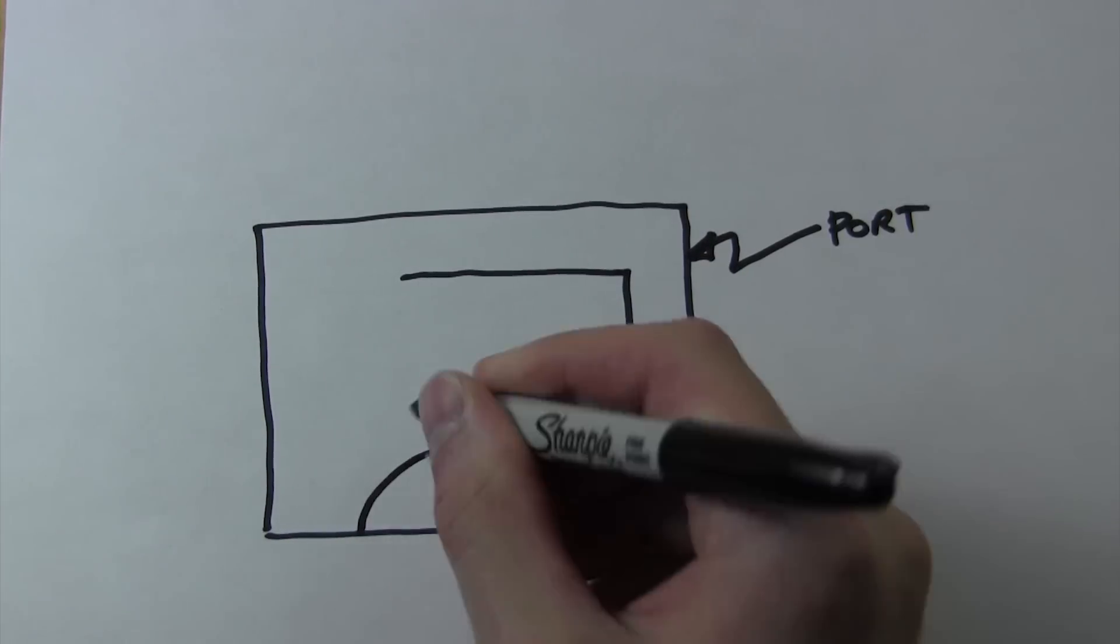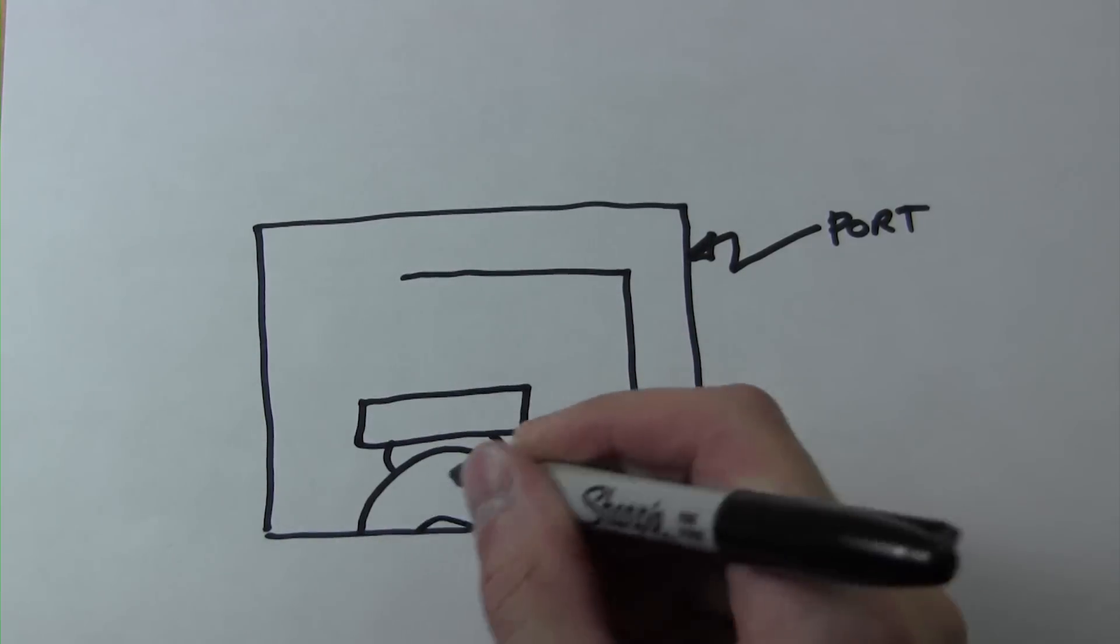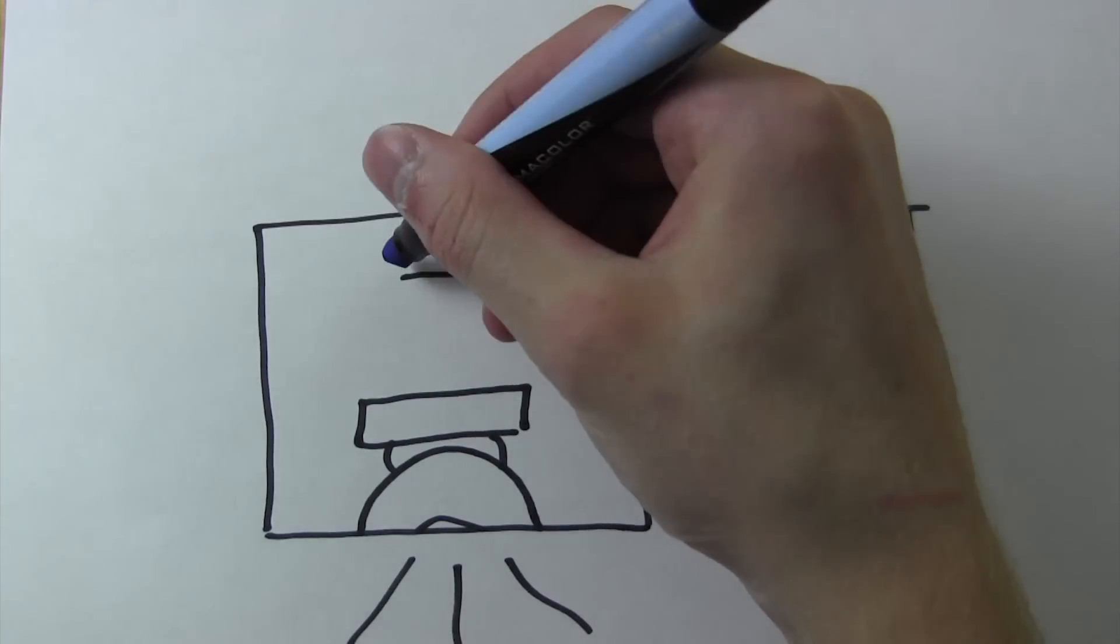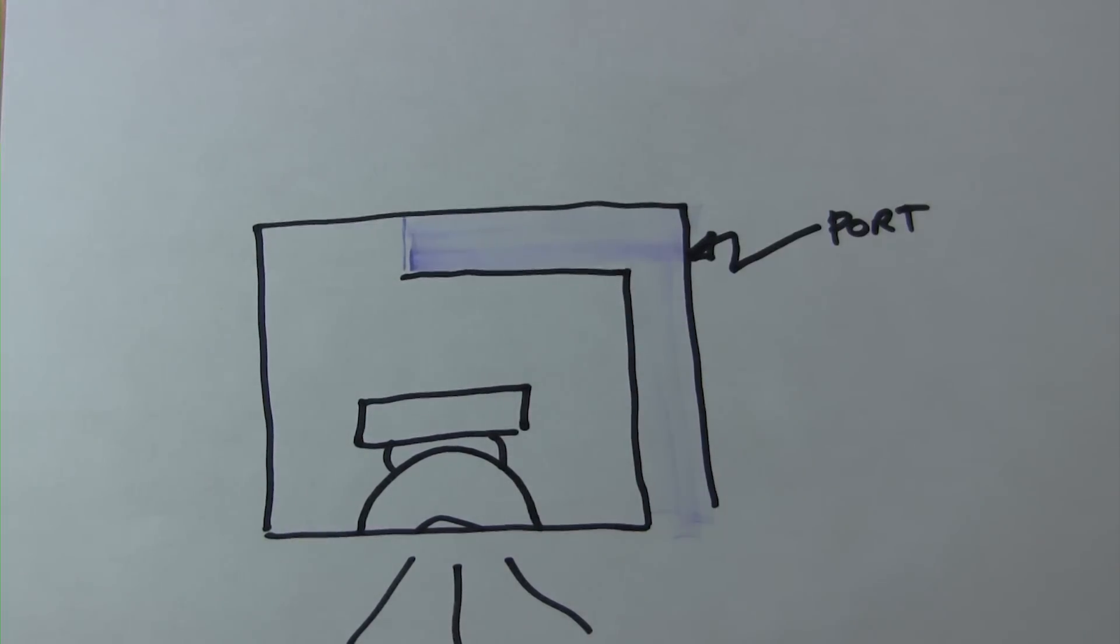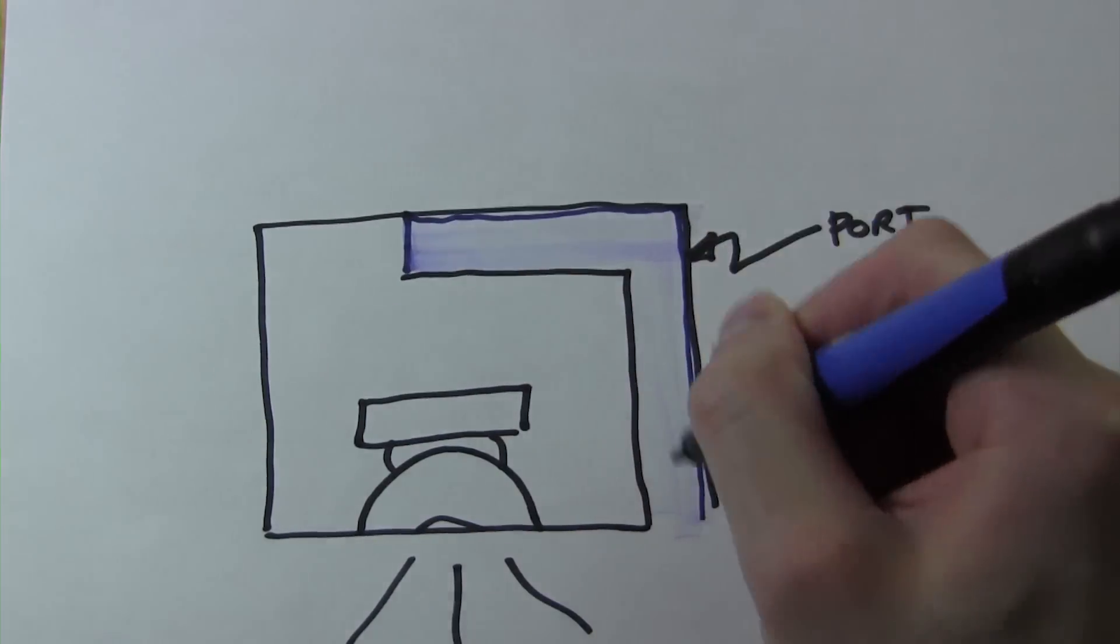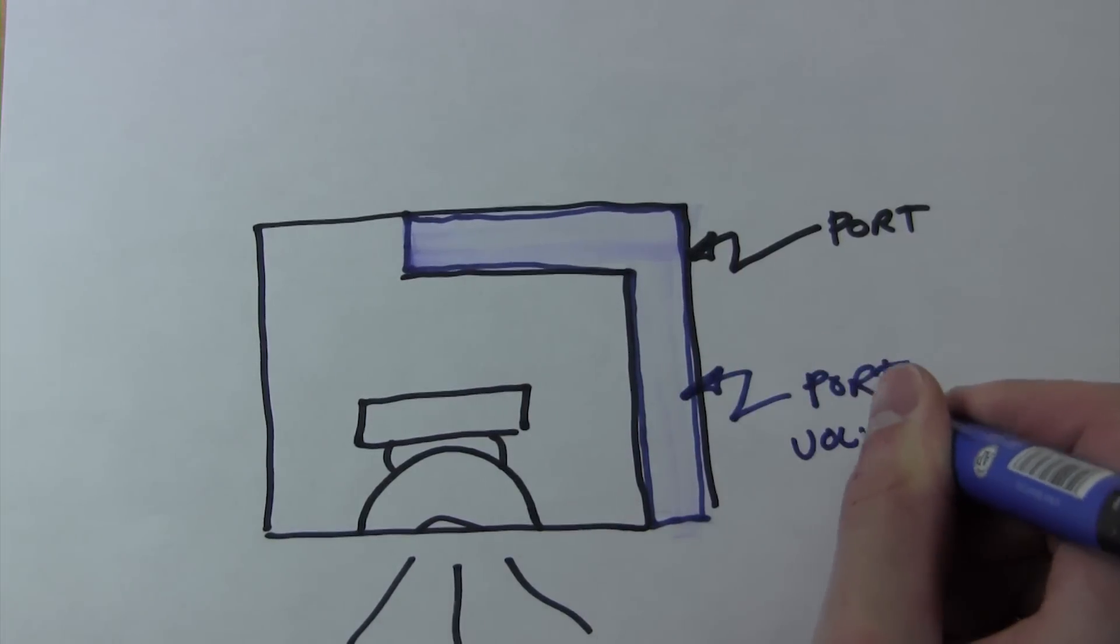In this case, let's say that we have a slot ported box with the port on the right-hand side. The port volume is determined by the cross-sectional area of the port multiplied by the length of the port, and it is shown in what I have highlighted blue on this illustration.